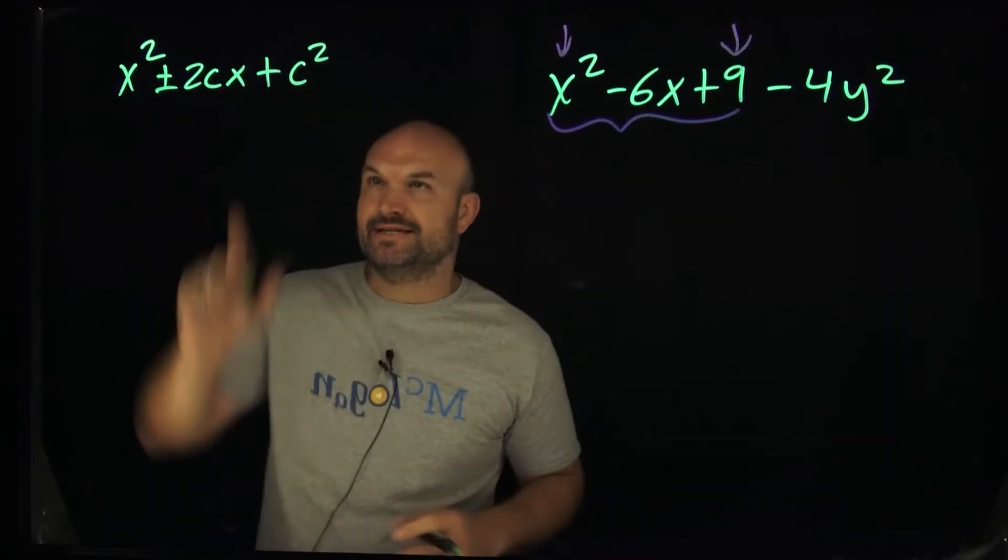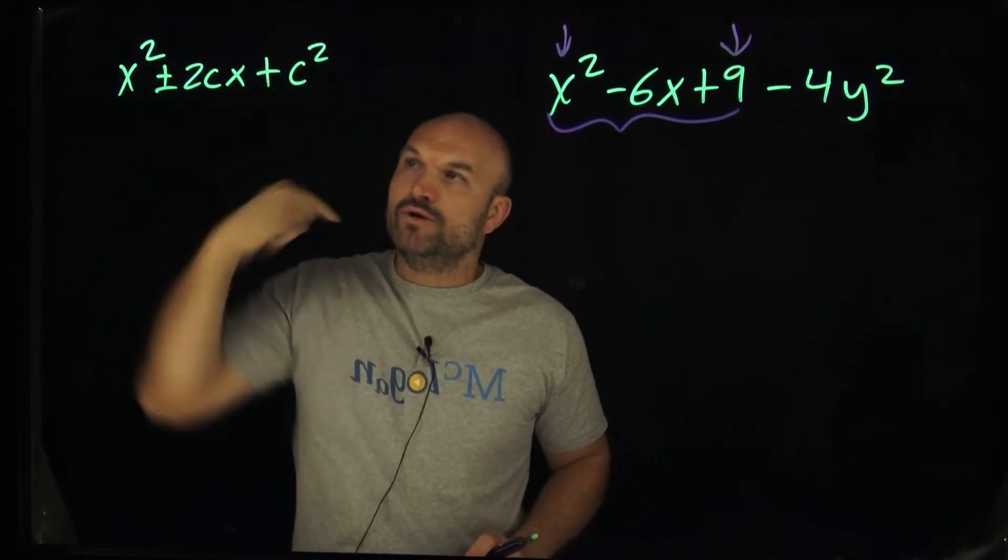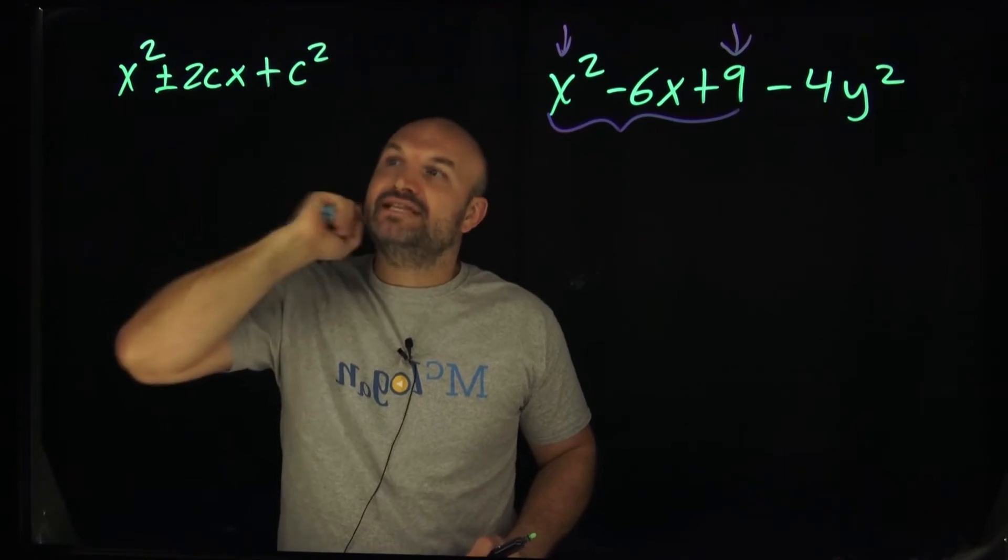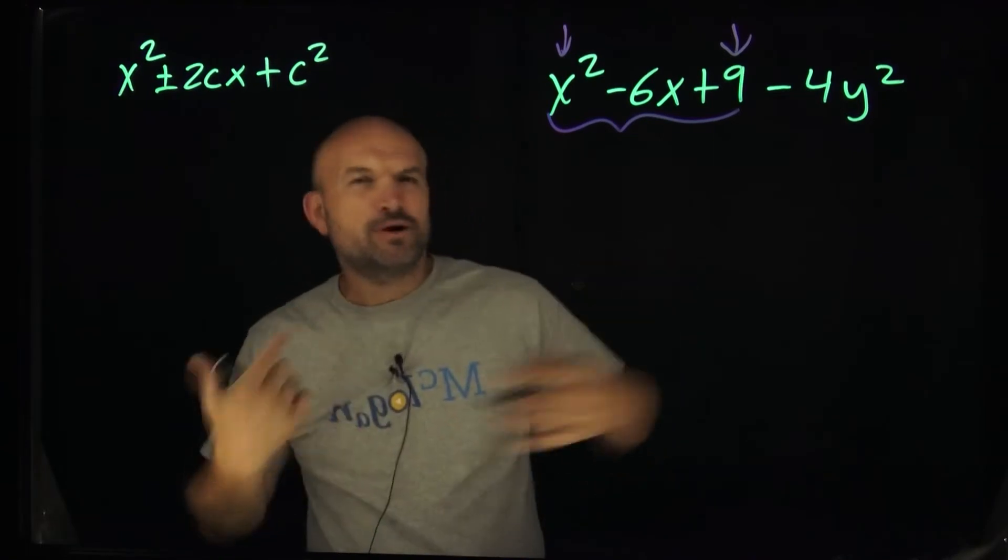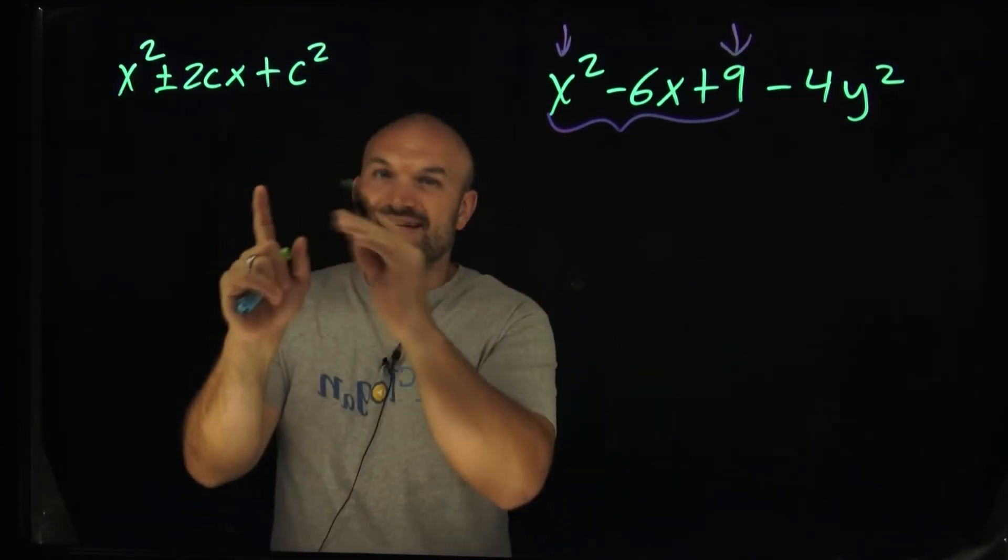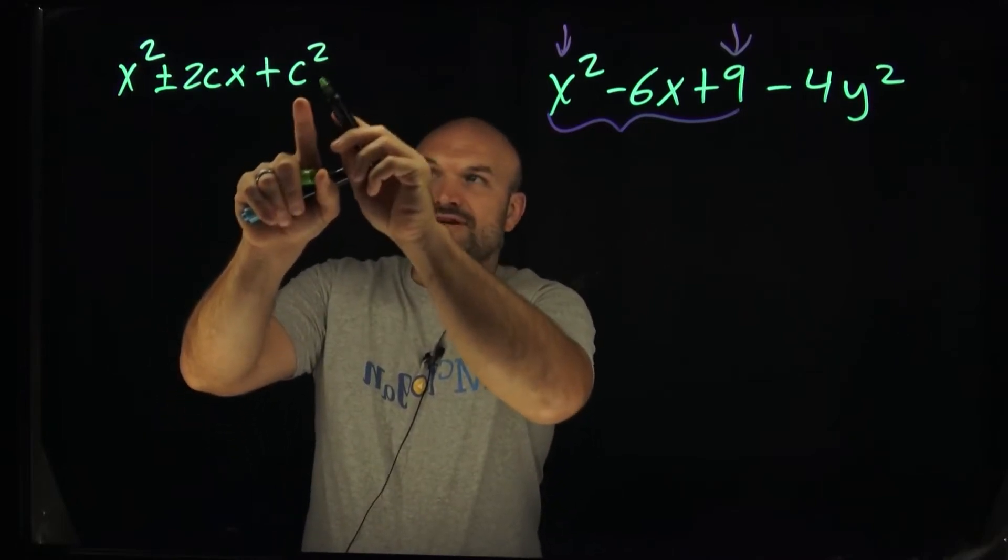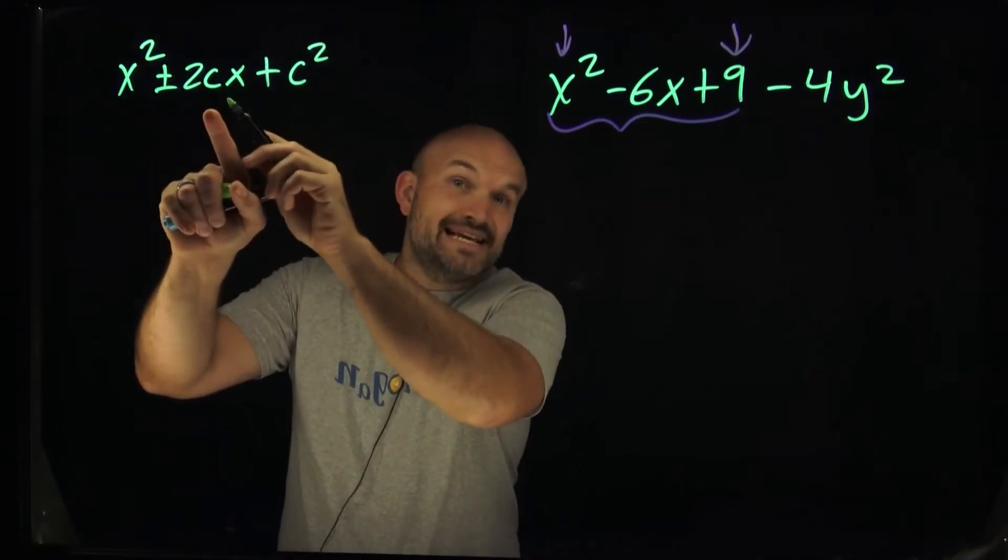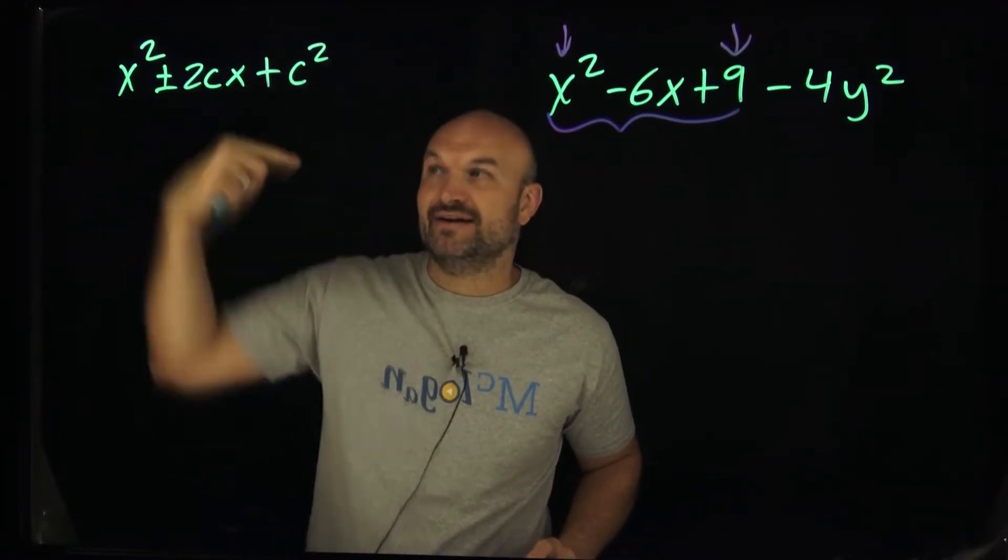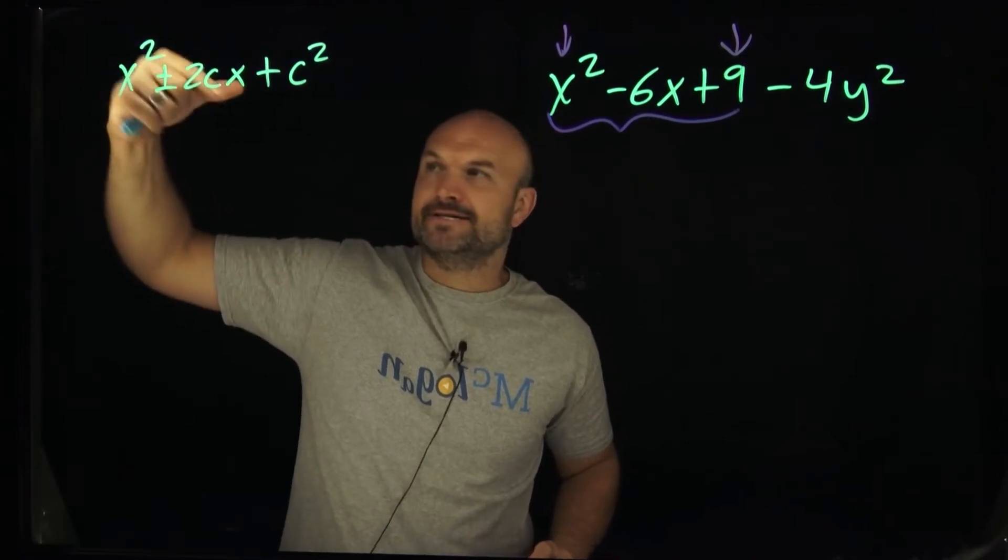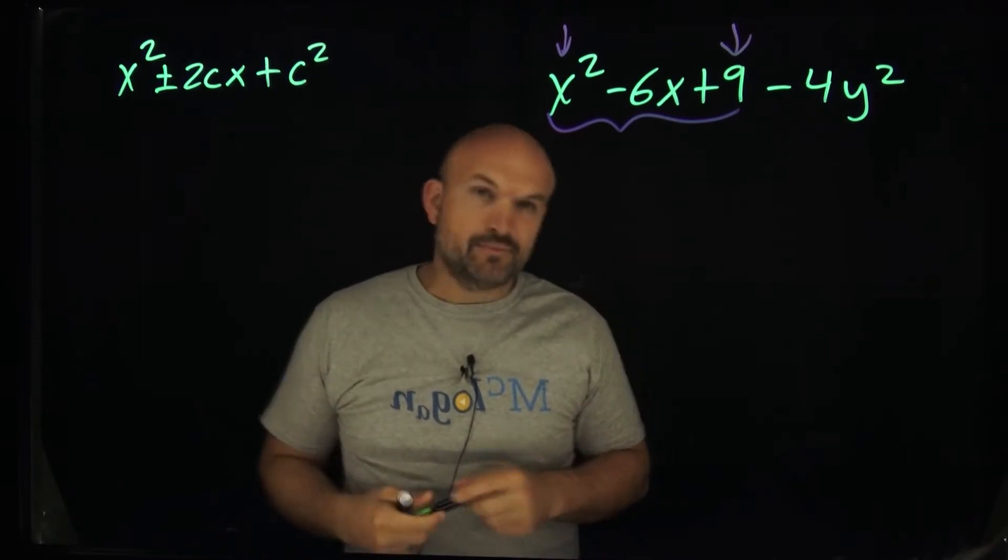So a perfect square trinomial looks something like this: we have our first term is squared and our last term is squared. And then if you look at your middle term, what you have is going to be two times the square root of your c squared. So that's just going to be a regular c. Now again, a lot of times I know we talk about quadratics like a, b. I'm just going to represent that b as a two times c. So basically if you have your last term is squared, then you're going to take the square root of it to find c, and then multiply it by two.